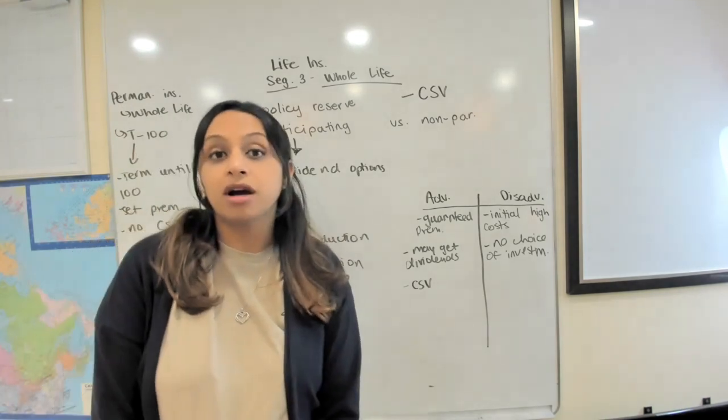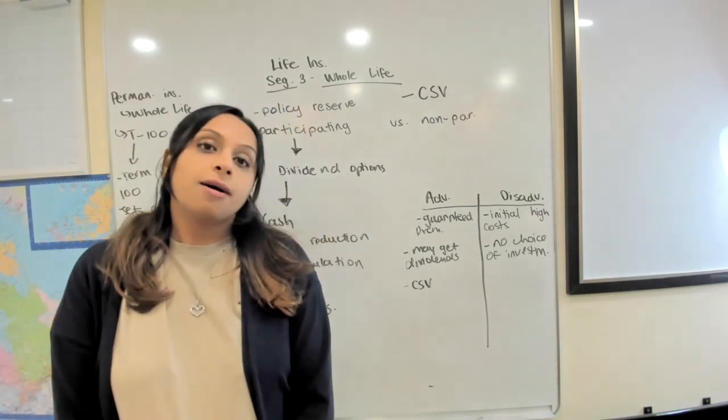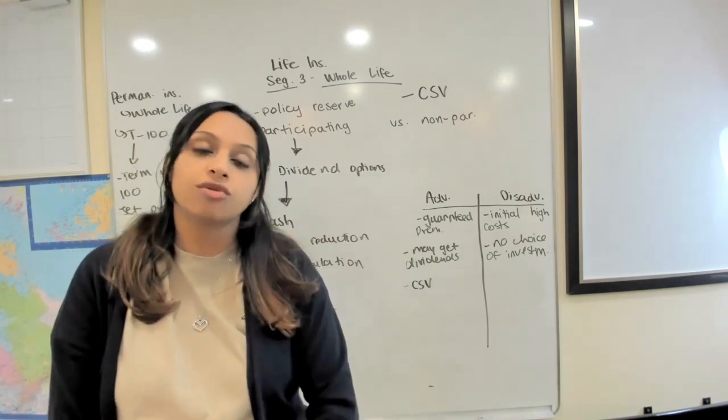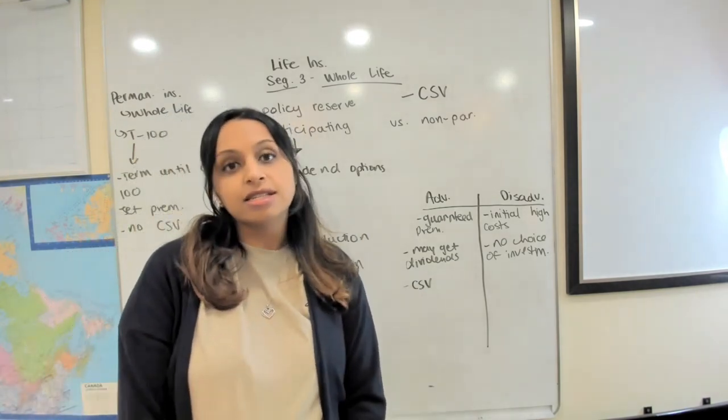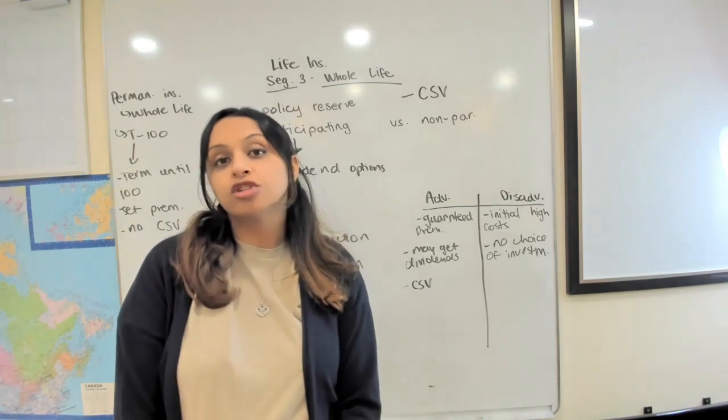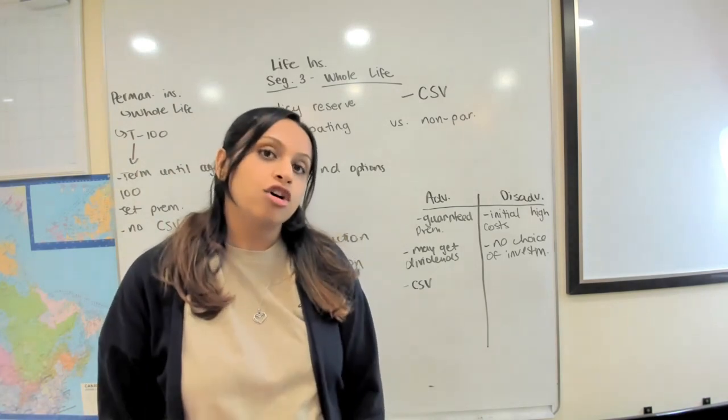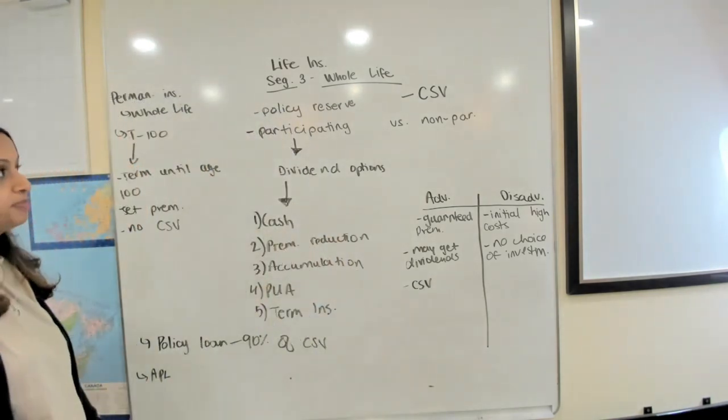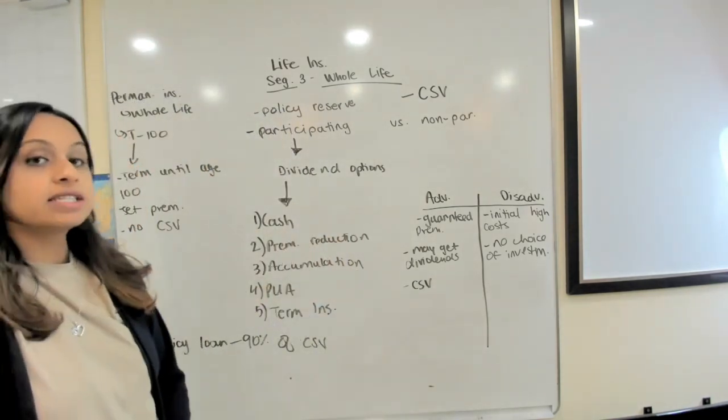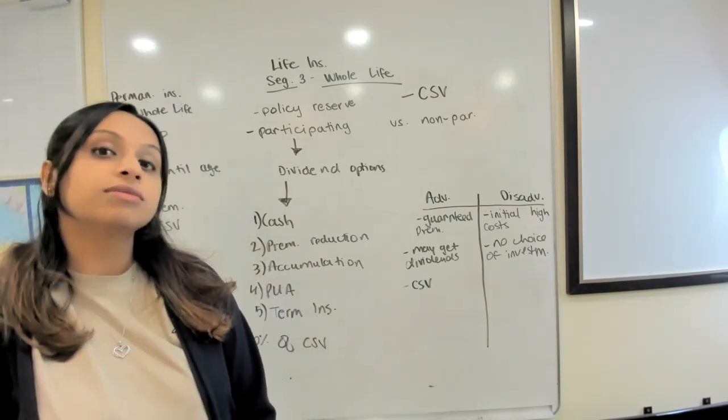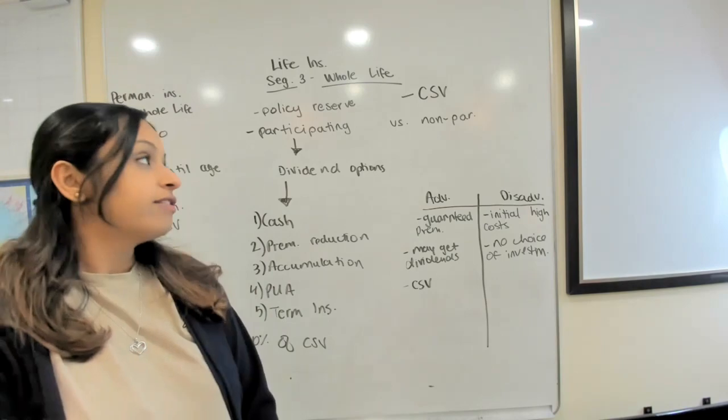But that is it, and it will stay that same price until the rest of their life. So it is higher in the initial years to sort of offset that risk that the insurance company is taking for the rest of their life. The biggest positive or biggest feature that people really love about whole life is that it builds a policy reserve which is a CSV or cash surrender value.